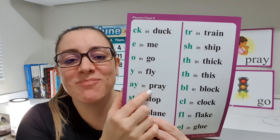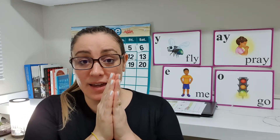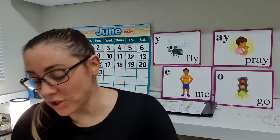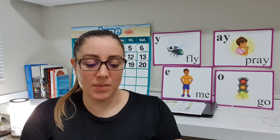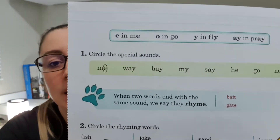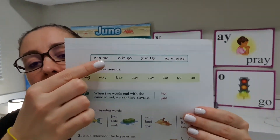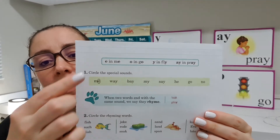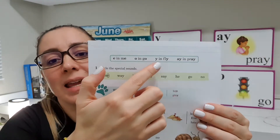A in pray, A, Y. Então, hoje nós vamos ver esses special sounds. Page 19. Página 19. We have these special sounds here on the top of the page: I in me, O in go, I in fly, A in pray.